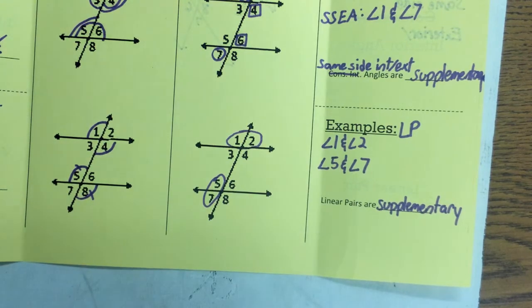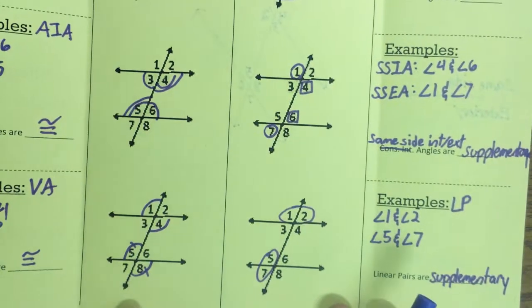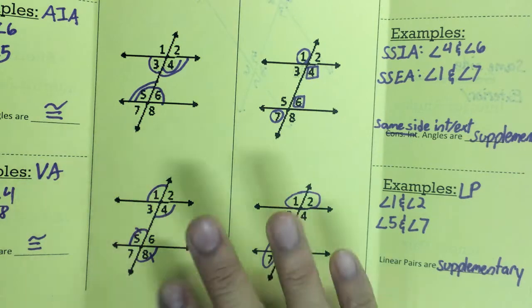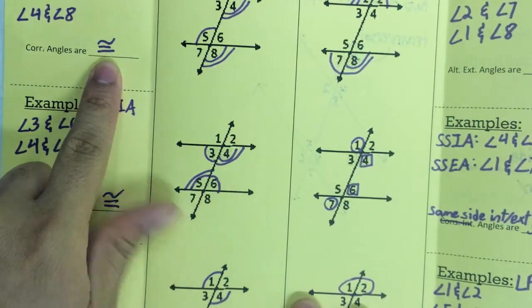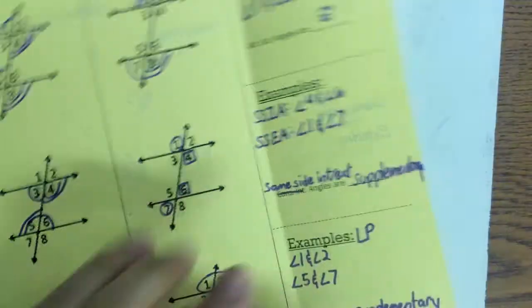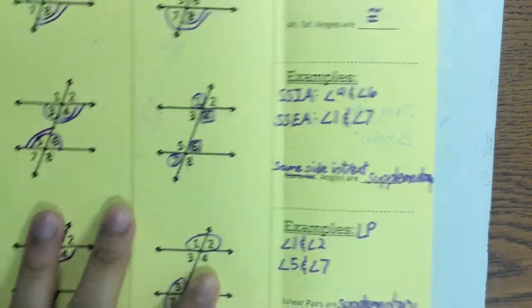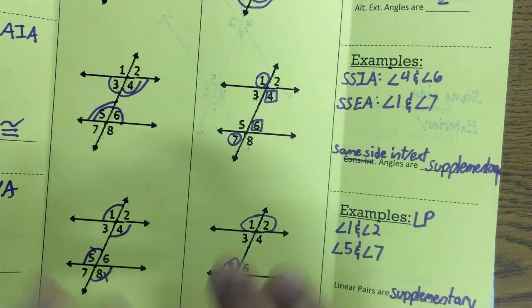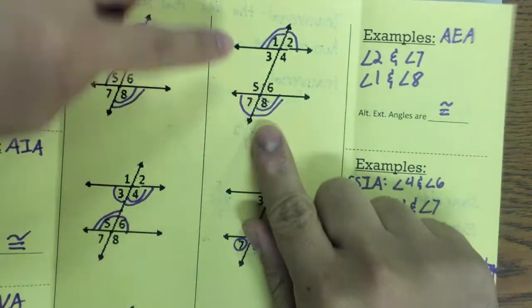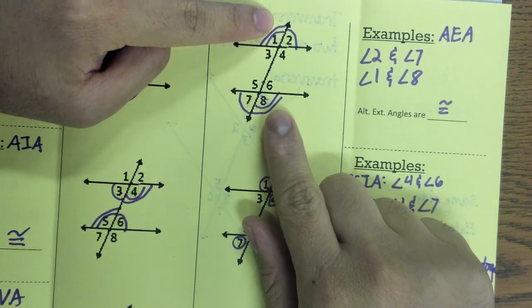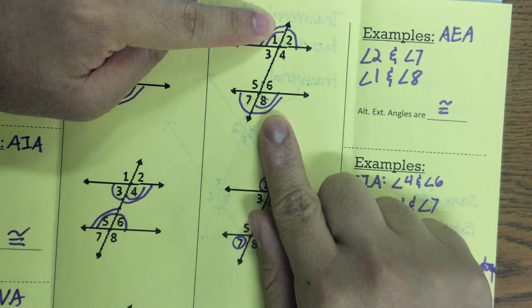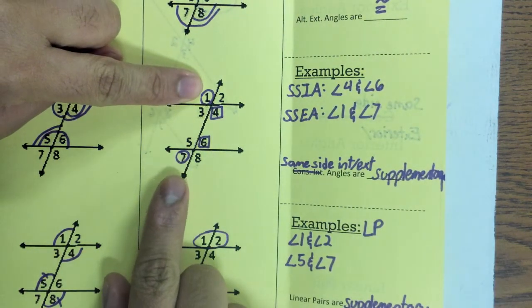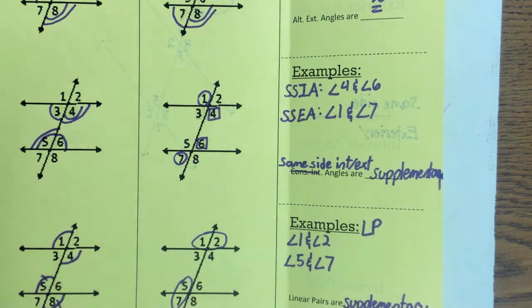These are our special angle pairs when we have two parallel lines cut by a transversal. We're going to use the properties — congruence and supplementary relationships — to set up equations, solve for x, and solve for the angles. If angles are congruent, we set them equal to each other; for example, angle eight equals angle one. If they're supplementary, we set up angle one plus angle seven equals 180, and that's what we solve.